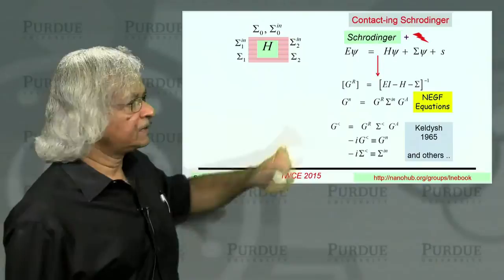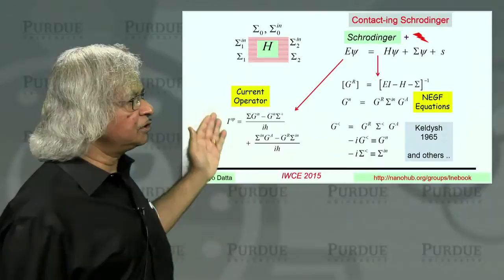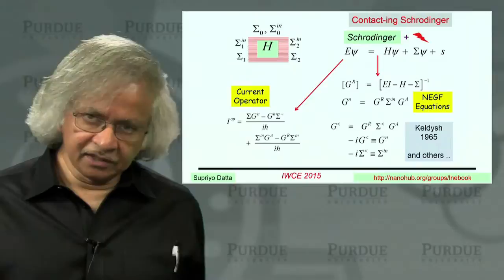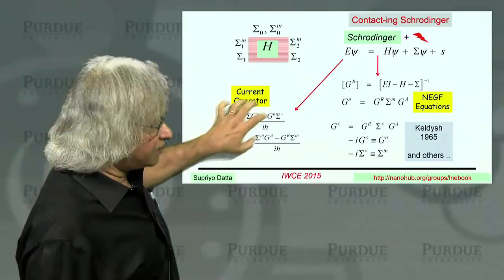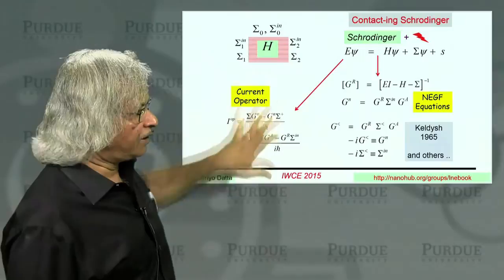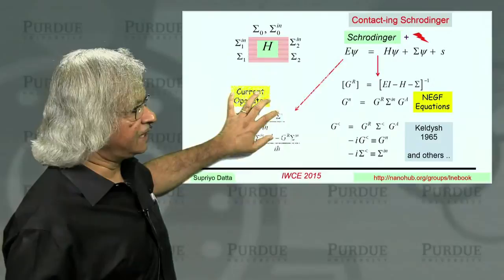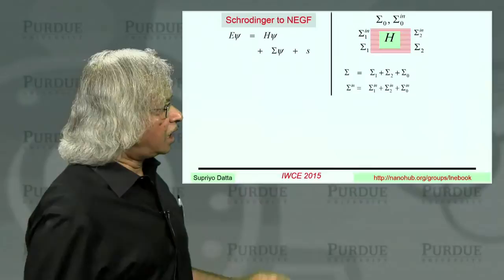Now, in NEGF, there's also a current operator that you can use to calculate different kinds of current. Just ordinary current or spin currents or heat current. And this was not quite in the original 60s work. This came up more in the 90s. But this equation, this operator, you can get from this one-electron view that I'll be describing to you. However, in this lecture, I won't talk much about this. Instead, we'll focus on these NEGF equations.